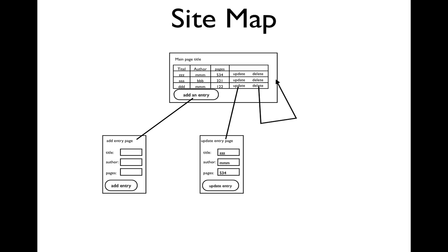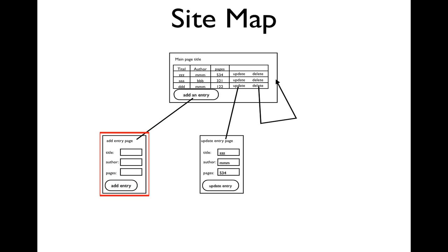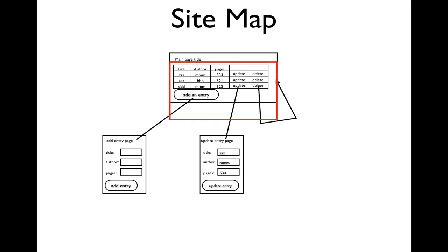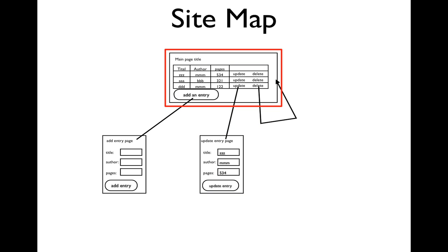Let's think about what the viewer will see. We have displayed a sitemap. The first page is the table with the data from the database. If they click on Add Entry, they get an Add Entry page. When they fill that out and click Add Entry, they go back to the Browse table. If they click on Update, they go to an Update Entry page, make adjustments, click Update Entry, and go back to the table view. Delete simply displays the table again but with one less record.